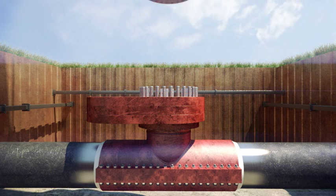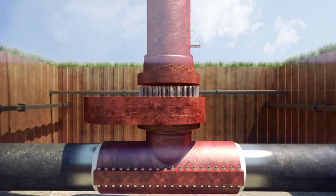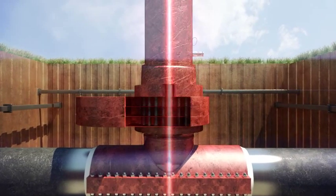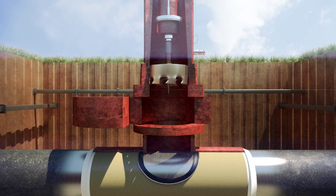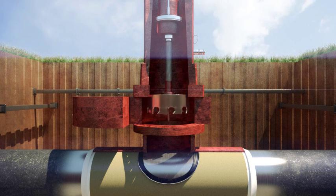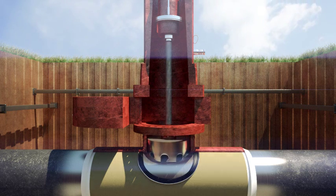The drill and hole cutter then complete the coupon to be removed from the pipeline. During the drilling operation, the drill contains retention wires which retain the coupon as it is cut free from the pipeline.